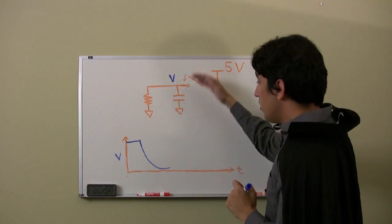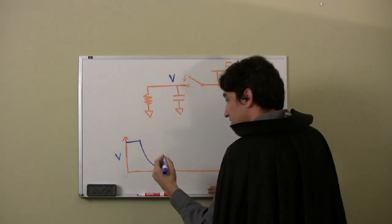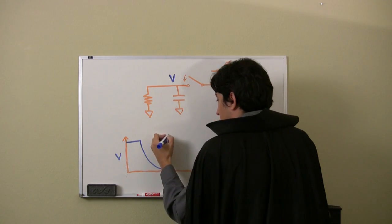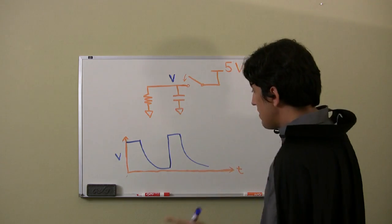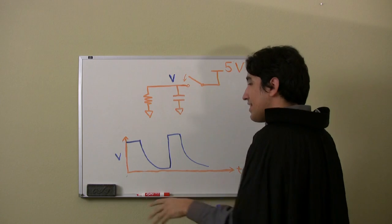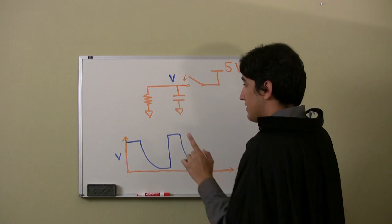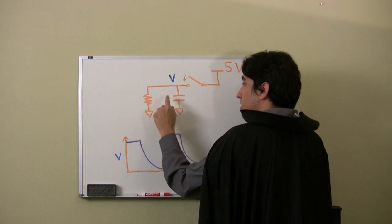So if I was to keep opening and closing this switch over and over, it would charge the capacitor and then let it discharge. And the time it takes to discharge would be exactly the same each and every time, as long as I don't change this resistance or this capacitance.